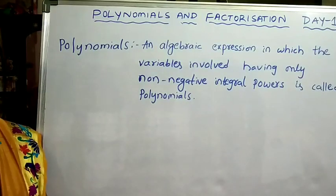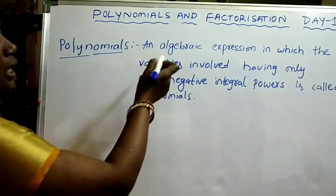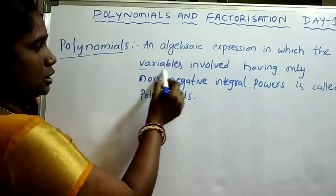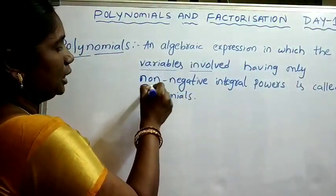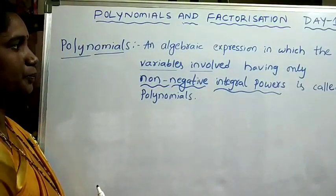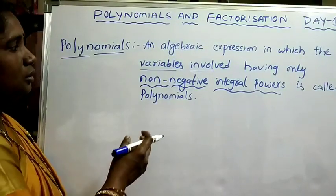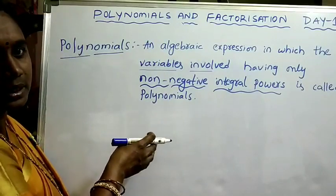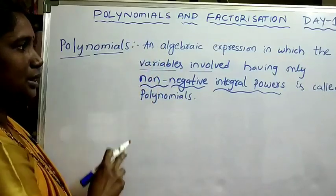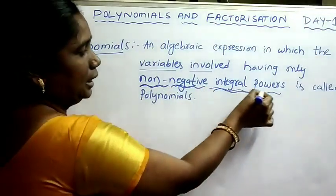Now we will see polynomials. What are polynomials? An algebraic expression in which the variables involved have only non-negative integral powers is called a polynomial. You all know algebraic expressions — we just recalled it. Combination of constants and variables connected by plus, minus, into, division is an algebraic expression. In that algebraic expression, the variables must have non-negative integral powers.